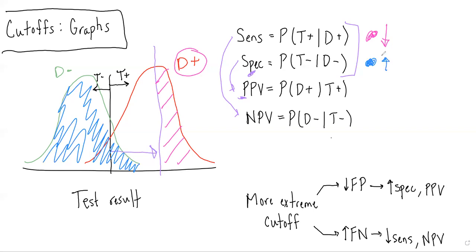And then because sensitivity has gone down, I know NPV has also gone down, and because specificity has gone up, I know PPV has also gone up.